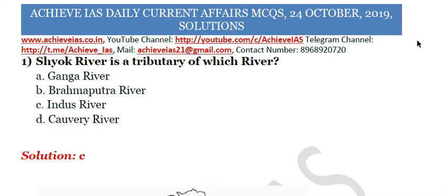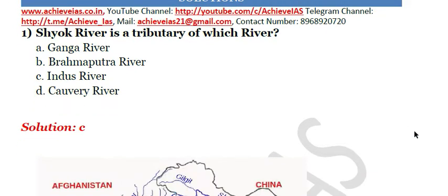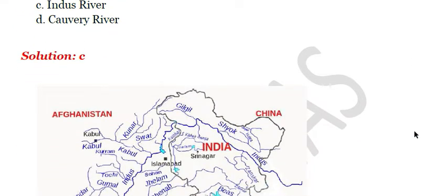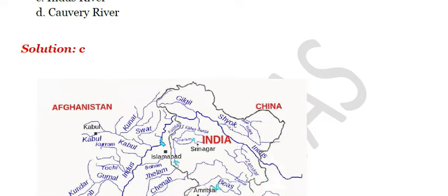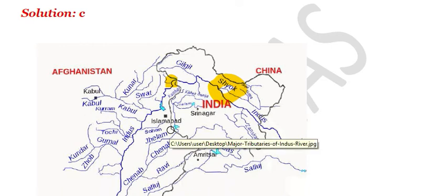The first question is: Shaiok river is a tributary of which river? A. Ganga, B. Brahmaputra, C. Indus, D. Kaveri. The answer is C. Shaiok is basically a river that flows in Jammu and Kashmir. It is a right bank tributary of the Indus. The Indus river flows and has multiple tributaries before it enters Pakistan. You can check more detail by pausing the video.